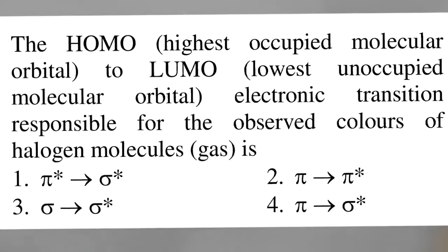First question. The HOMO to LUMO electronic transition responsible for the observed colors of halogen molecules is: